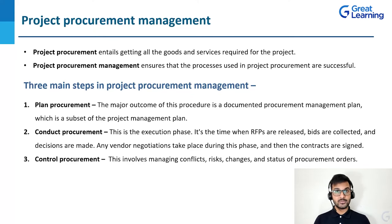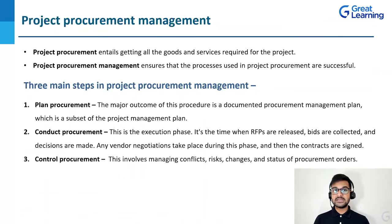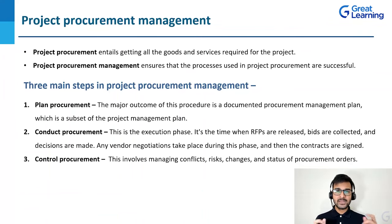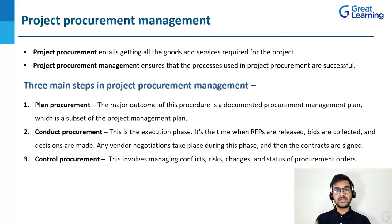The last phase is control procurement. Once everything is executed, control procurement involves managing conflicts, risks, changes, and status of procurement orders. Delivery should be on time, quality should be correct, and quantity should be correct. This is the inspection part — ensuring all quality and quantity standards are followed, and all specifications set in the terms and conditions are met. Project procurement management is a subset of the entire project management — sometimes handled by a procurement manager, sometimes by the project manager, depending on the project size.